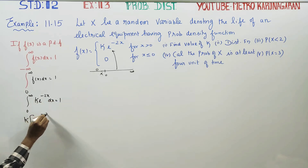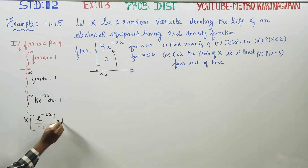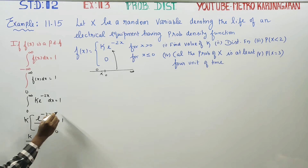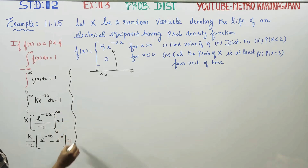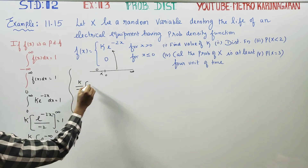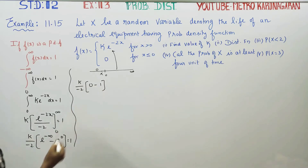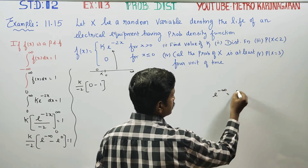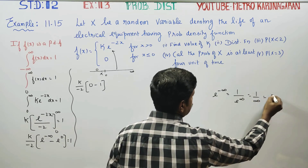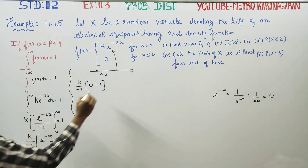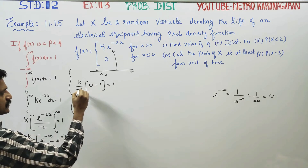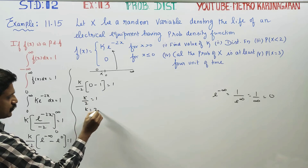K times e to the power minus 2x divided by minus 2, evaluated from 0 to infinity, equals 1. The upper limit: e to the power of minus 2 times infinity becomes e to the power minus infinity, which is 0. The lower limit: e to the power 0 is 1. So 0 minus 1 is minus 1; minus times minus cancels to plus, giving K divided by 2 equals 1, therefore K equals 2.